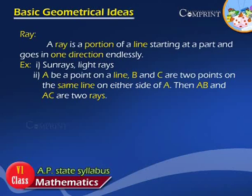2) If A be a point on a line, B and C are two points on the same line on either side of A, then AB and AC are two rays.